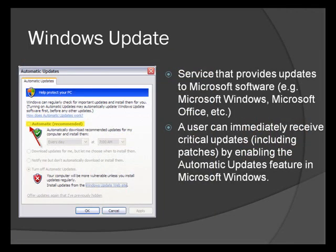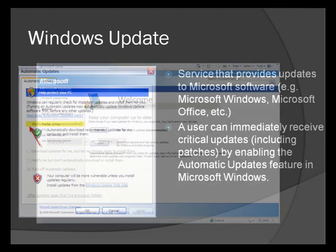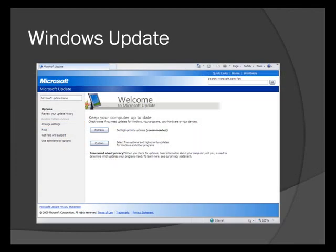The last element that can protect your computer against security threats is Windows Update. Windows Update is a service by Microsoft that provides general updates and security updates for a user's computer. A user can access Windows Update by going to www.windowsupdate.com, where he can select which updates he would like to install on his computer.